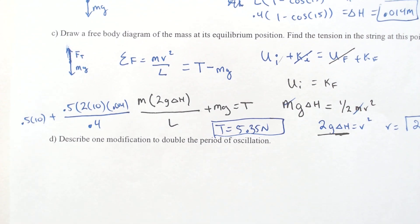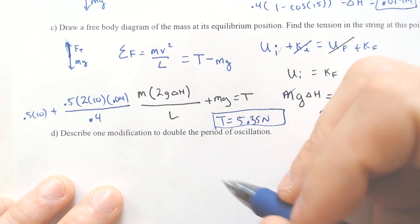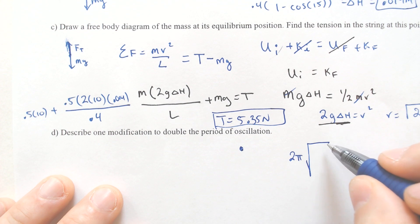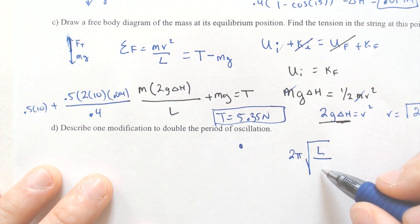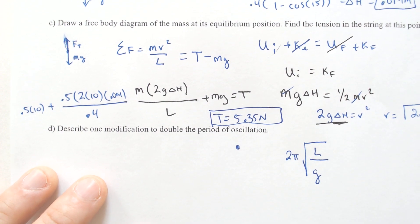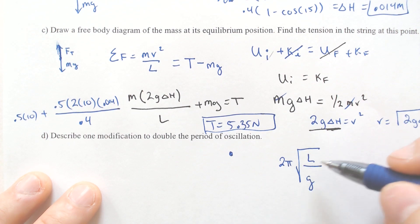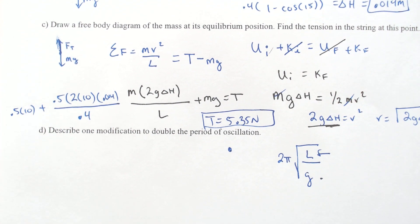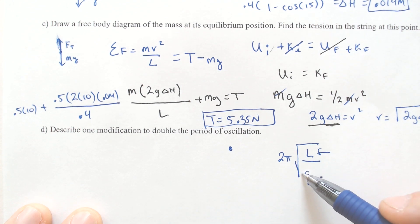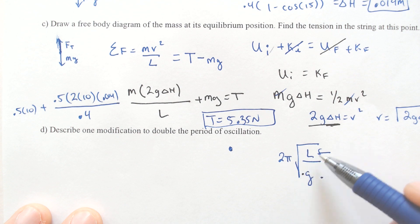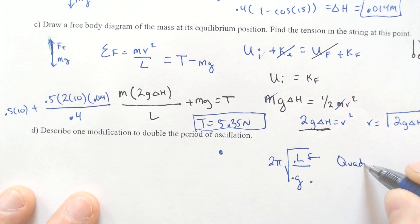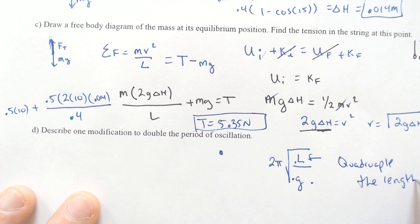The last question: describe one modification to double the oscillation period. Thinking of the formula T = 2π√(L/G) — you can't change gravity, but you can change the length. If you doubled the length, that wouldn't double the period because of the square root. You would need to multiply the length by 4, because the square root of 4 equals 2. So you must quadruple the length to double the period.